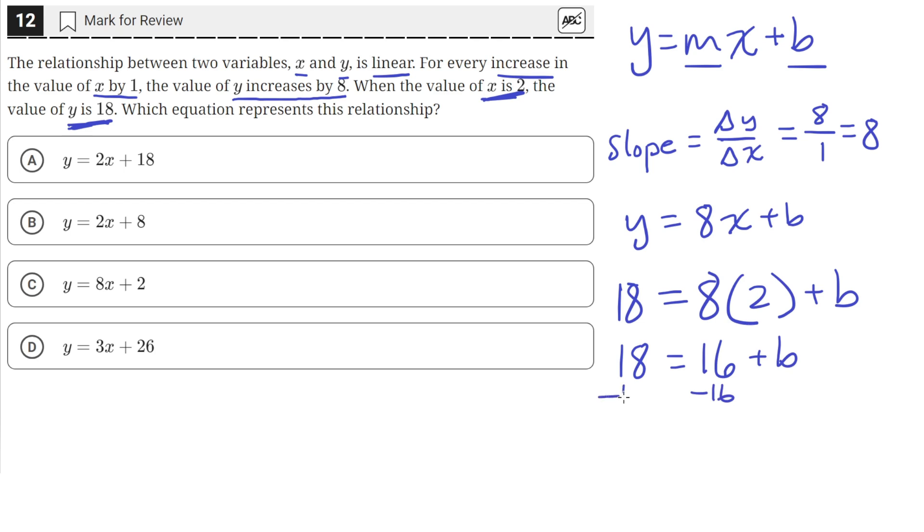So we subtract 16 from both sides, so on the left we'll have 2, and on the right we'll have b. So the value of b is 2.